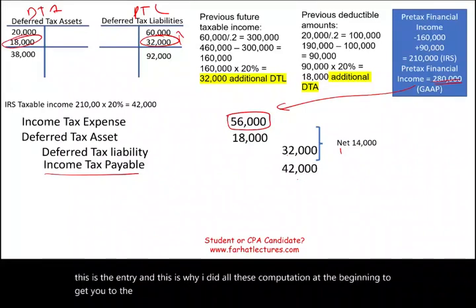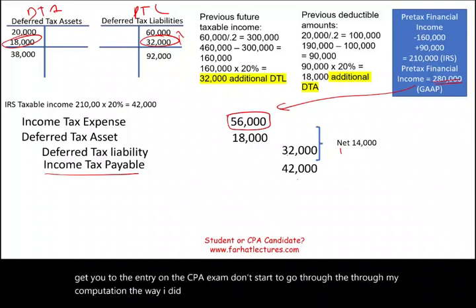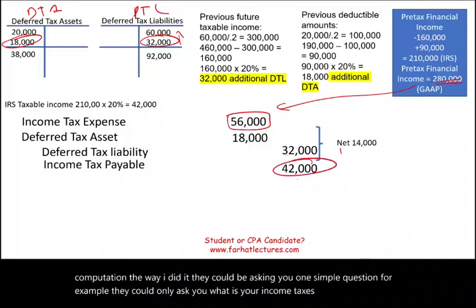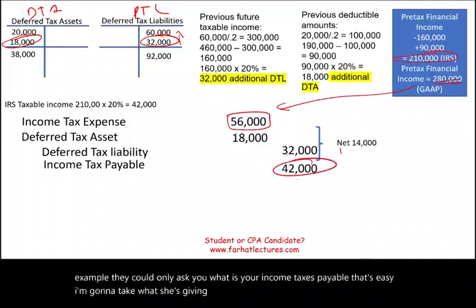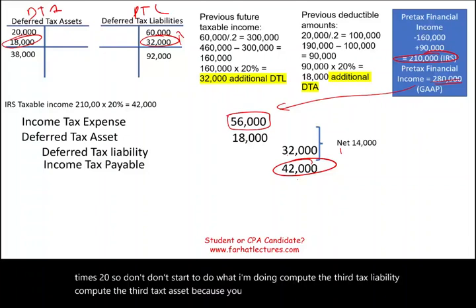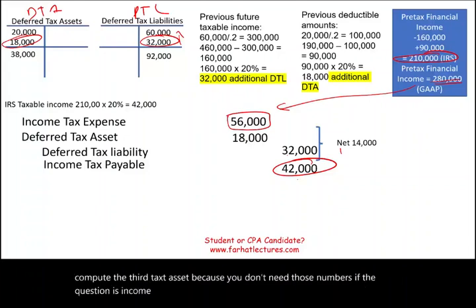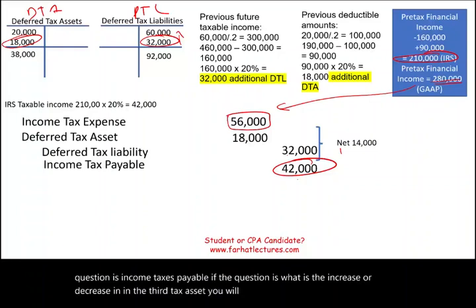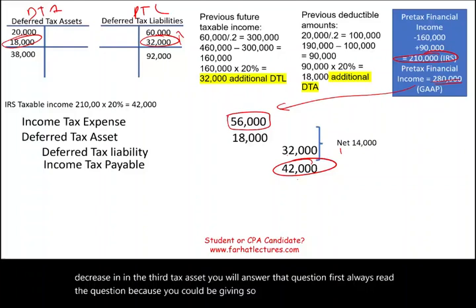On the CPA exam, don't start doing all this computation unless the question requires it. They could be asking you one simple question — for example, what is your income taxes payable? That's easy: $210,000 times 20%. Always read the question first, because you could be given many different questions about this same set of facts.